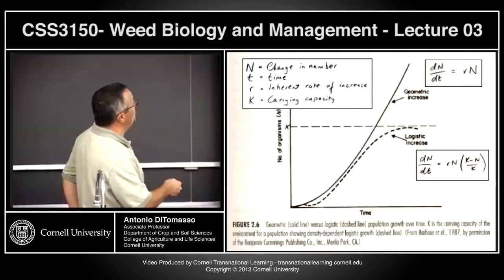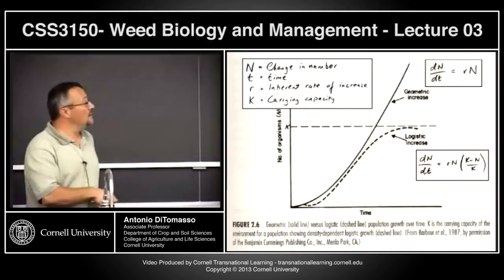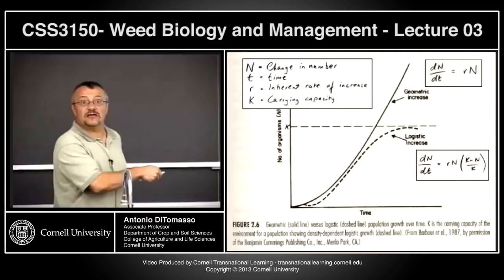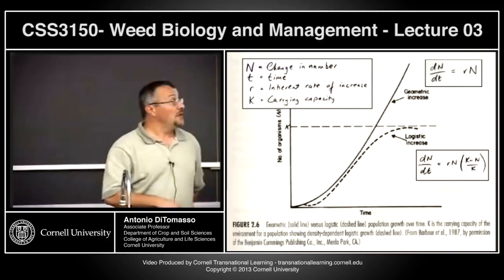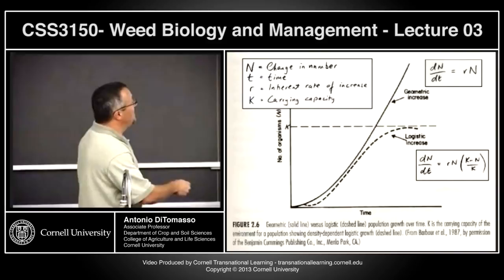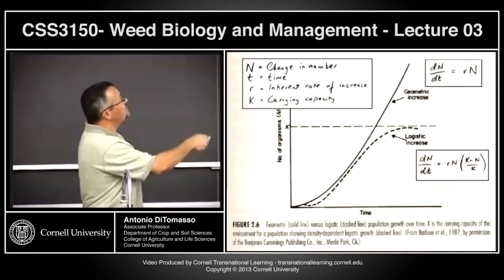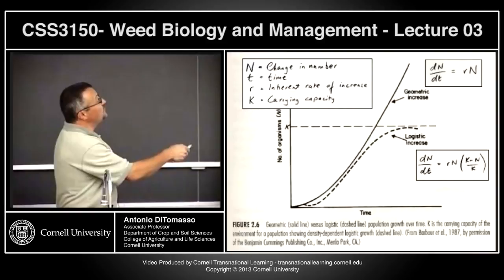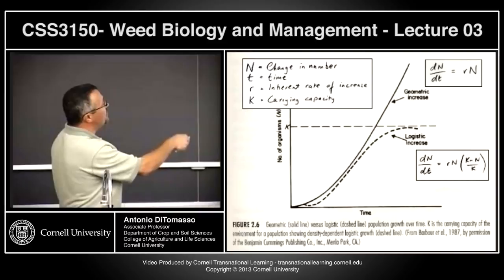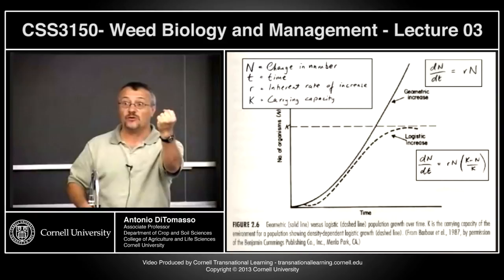Typically you get a population where, over time, it just basically exponentially — or geometrically — grows. This is also referred to as a geometric increase in the population, where something is just doubling or tripling as time goes on, really fast, with essentially unlimited growth. What determines how steep this curve is — the geometric increase in a population — is the change in number over the change in time. As time goes on, the number of organisms changes based on how many individuals you start with.